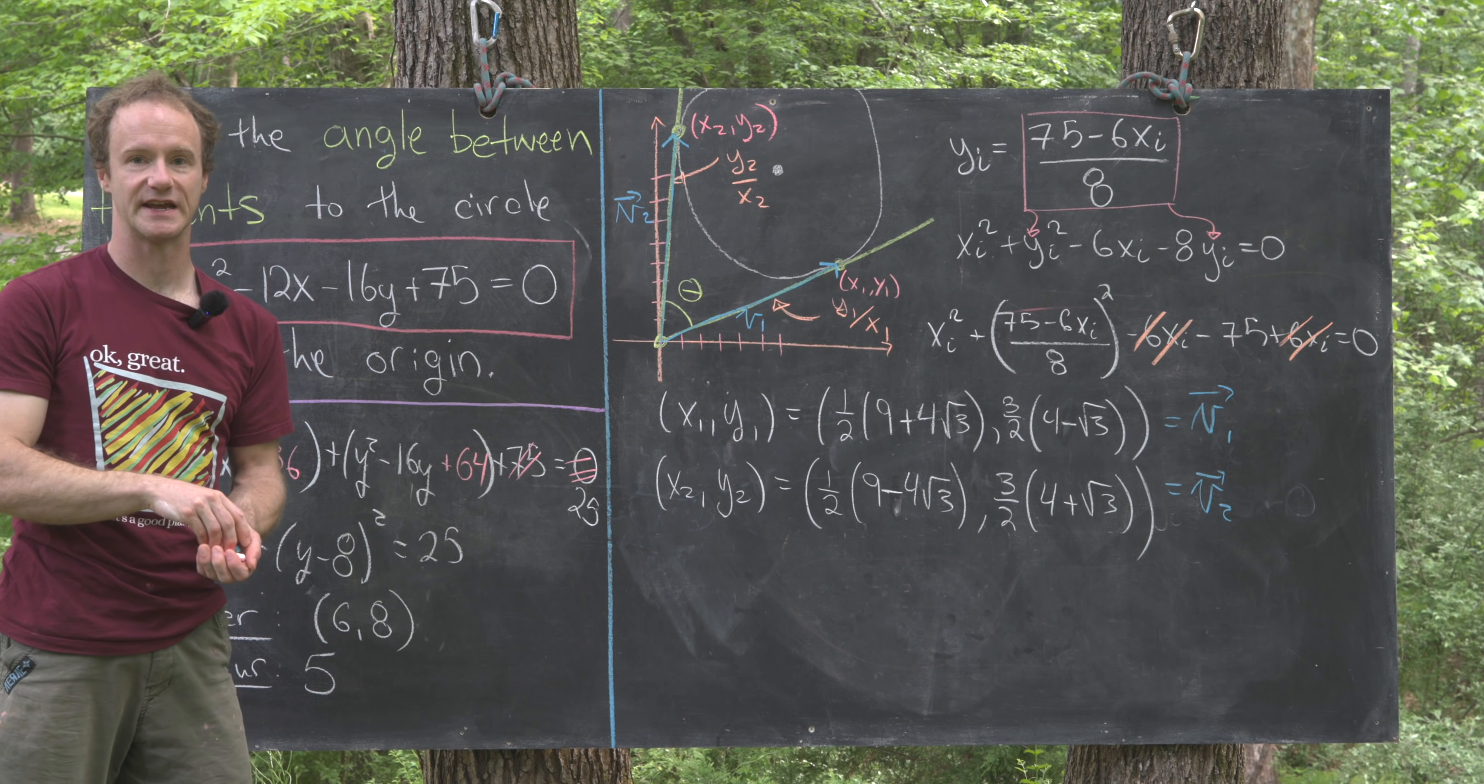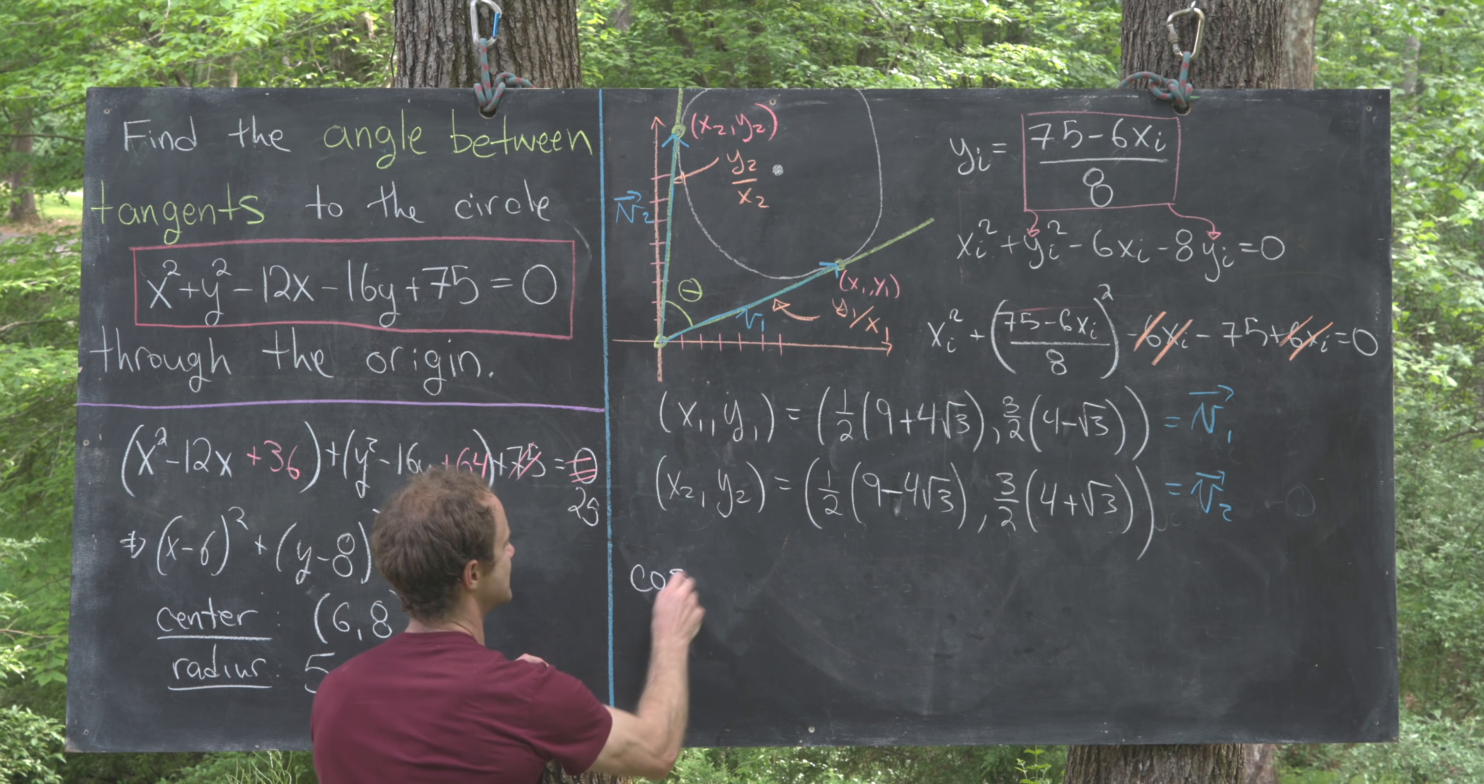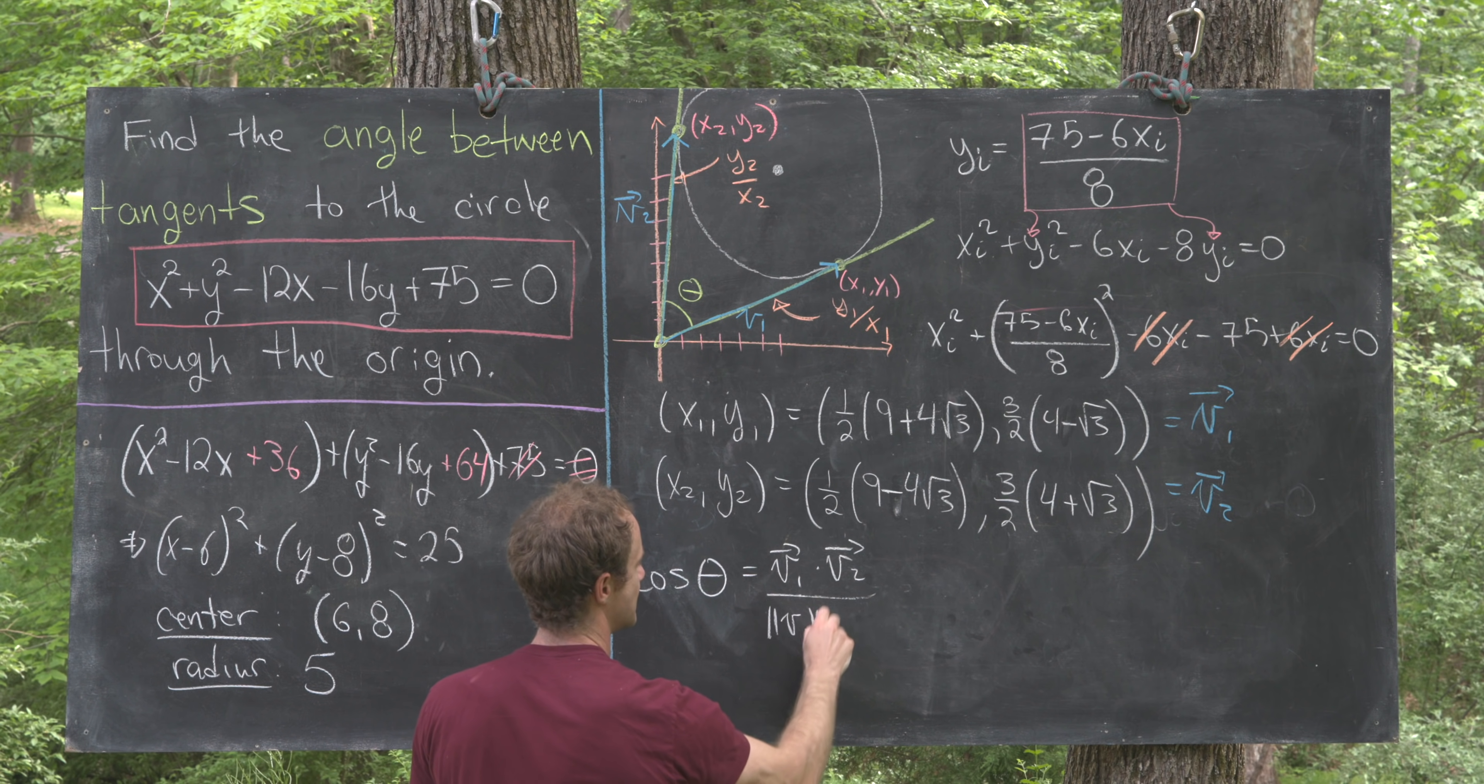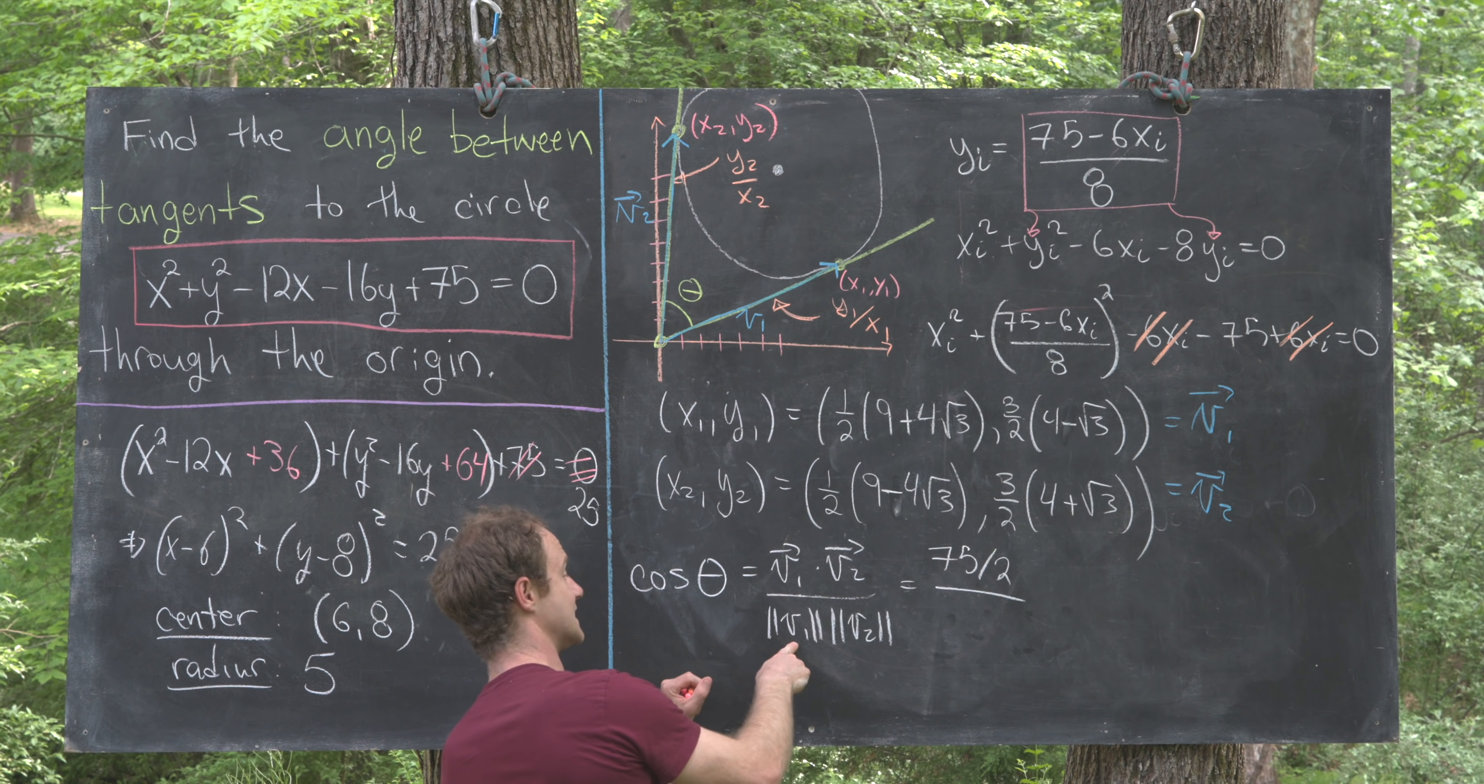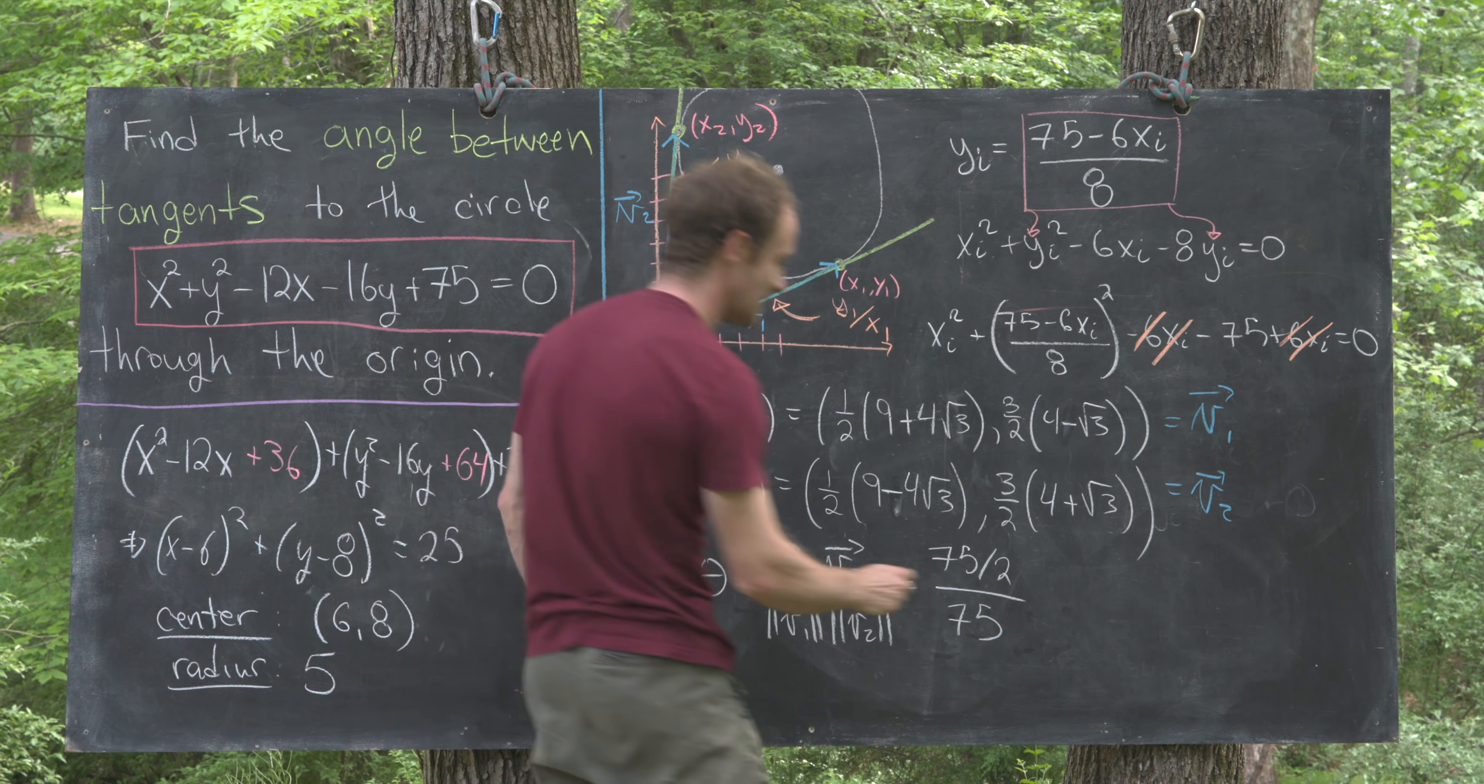Now we can use a well-known formula for the angle between two vectors, which says that cosine theta, where theta is the angle between these two vectors, is equal to v1 dot v2 over the magnitude of v1 times the magnitude of v2. If you do v1 dot v2, you'll get 75 over 2. If you do the magnitude of v1 times the magnitude of v2, you'll get 75. That's just an arithmetic calculation that's not too bad.